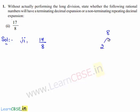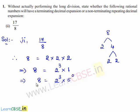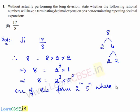8 can be written as 2 times 4, and 4 can be written as 2 times 2. Therefore, 8 can be expressed as 2 times 2 times 2, which implies 8 = 2^3 times 5^0. Therefore, the prime factors of 8 are of the form 2^m times 5^n, where m = 3 and n = 0 in this case.